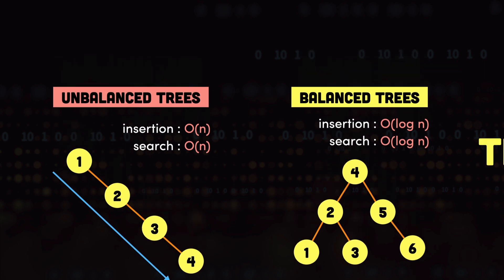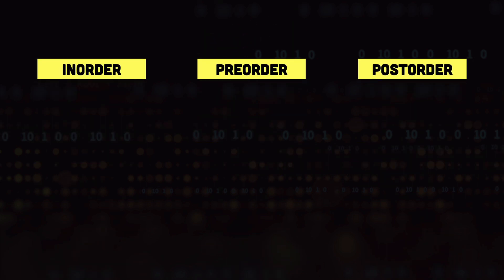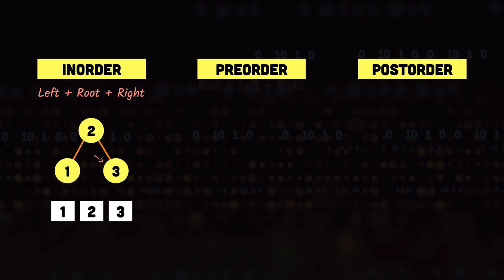Finally we have tree traversal — how we can visit each node of the tree. There are three different ways to traverse a tree. In in-order traversal, we visit the left node first, then the parent node, then the right node. So for this tree, we visit 1 (left), then 2 (root), then 3 (right), giving us 1, 2, 3.